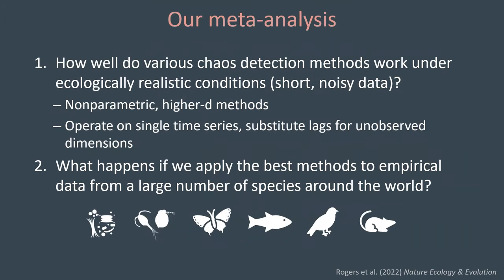Our analysis had two parts. The first was to test how well various chaos detection methods work under ecologically realistic conditions — that is, short and noisy data. We specifically used nonparametric higher-dimensional methods designed to operate on a single time series by substituting lags for unobserved dimensions. The second part tested what happens if we apply these best methods to empirical data from a large number of species around the world.